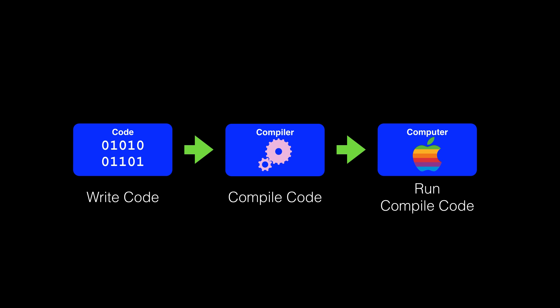Running a Java program is the same as running any other computer program in some ways, but in other ways it's very different. When you run a program compiled for your computer, you are running code compiled for your computer architecture. A Mac will only run on a Mac, Windows will only run on Windows, and Linux only runs on Linux.